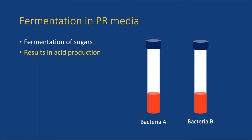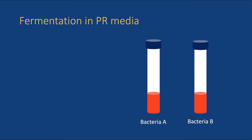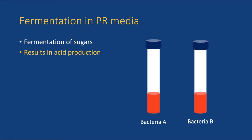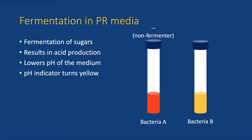After inoculation and incubation, we can check the color of the medium to determine if the bacteria can ferment the sugar we are testing. If the medium color did not change or turned red, the bacteria cannot ferment the sugar. If the medium turned yellow, the pH decreased, so the bacteria must be capable of fermenting the sugar in the medium.